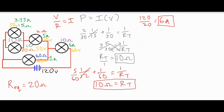We can now find the current through each lamp in that parallel pair: 50V ÷ 15Ω = 3.33 amps, and 50V ÷ 30Ω = 1.67 amps.